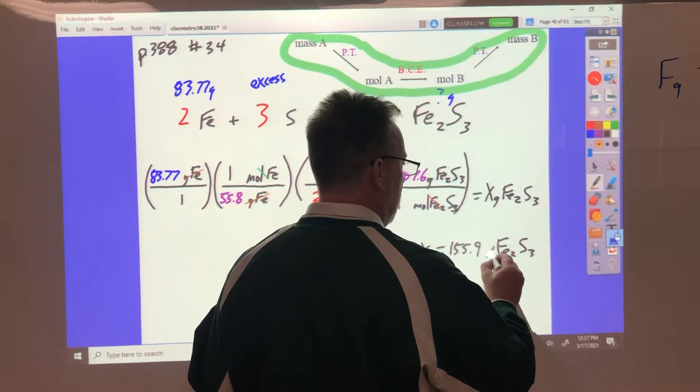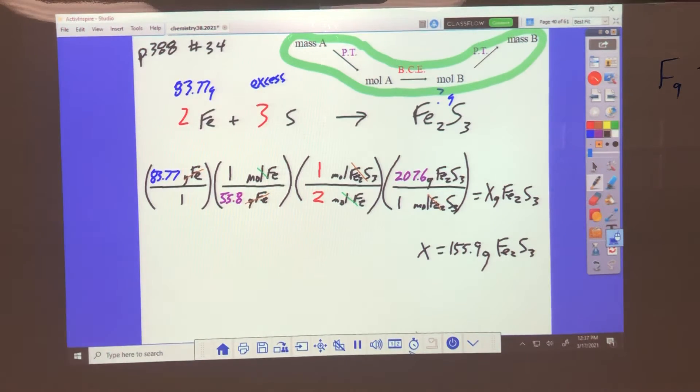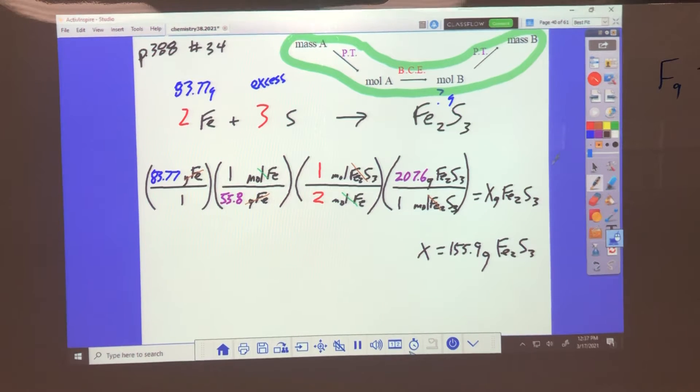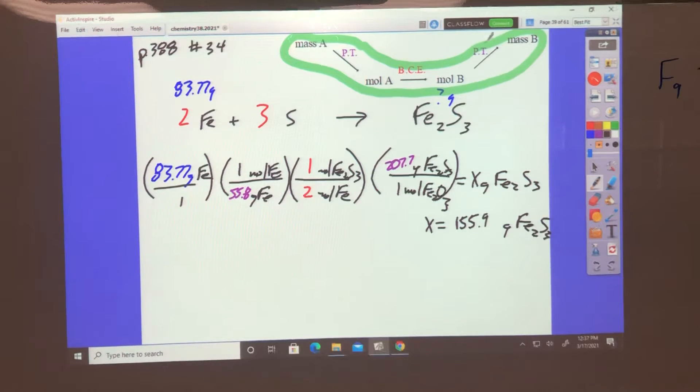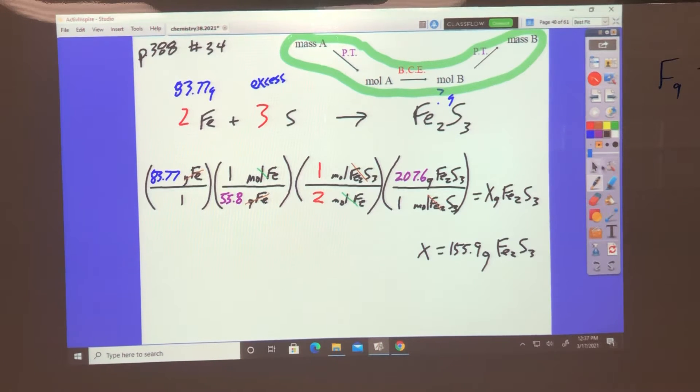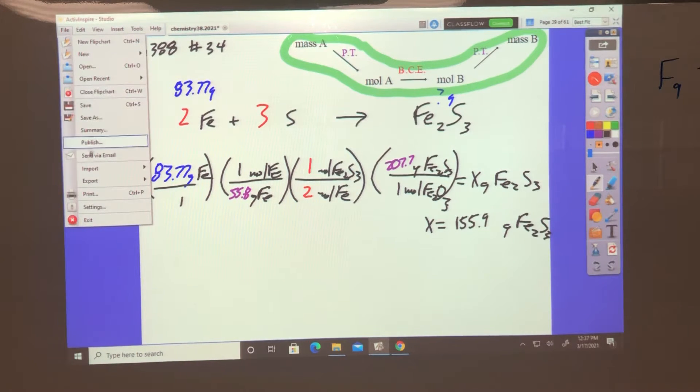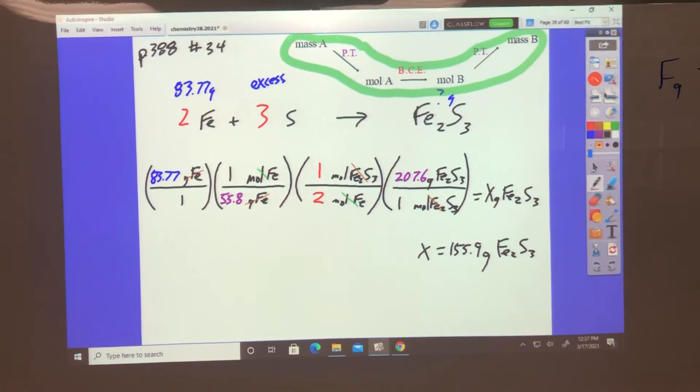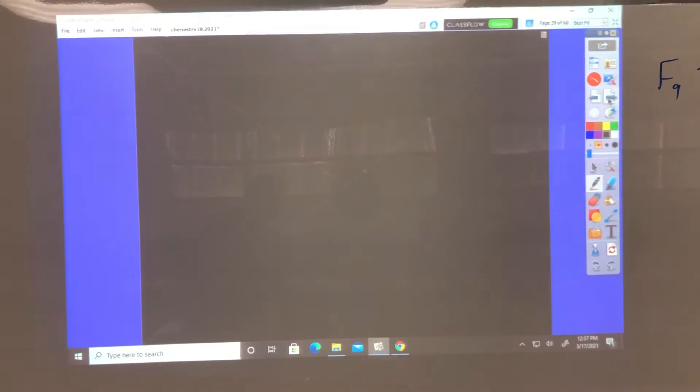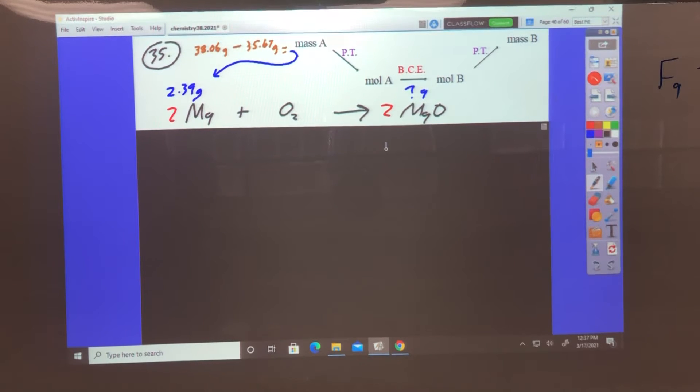155.8 grams is what I got. The book answer says 155.9 grams. Do they ask percent yield on that one? No, they just want to know the theoretical yield, so that's that one. That's that one, and the last one is 35. This one was not too shabby so I'm going to keep this one.